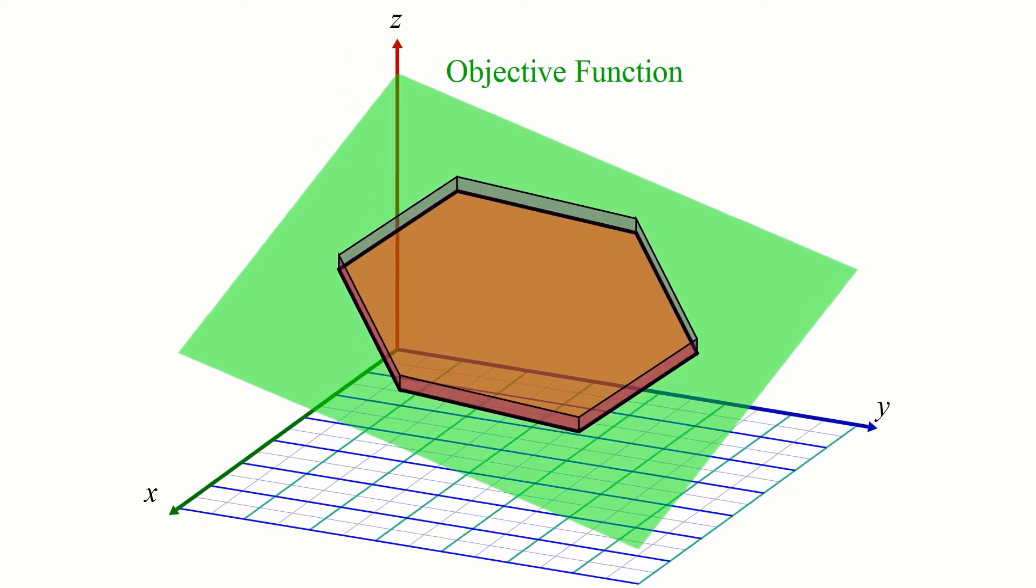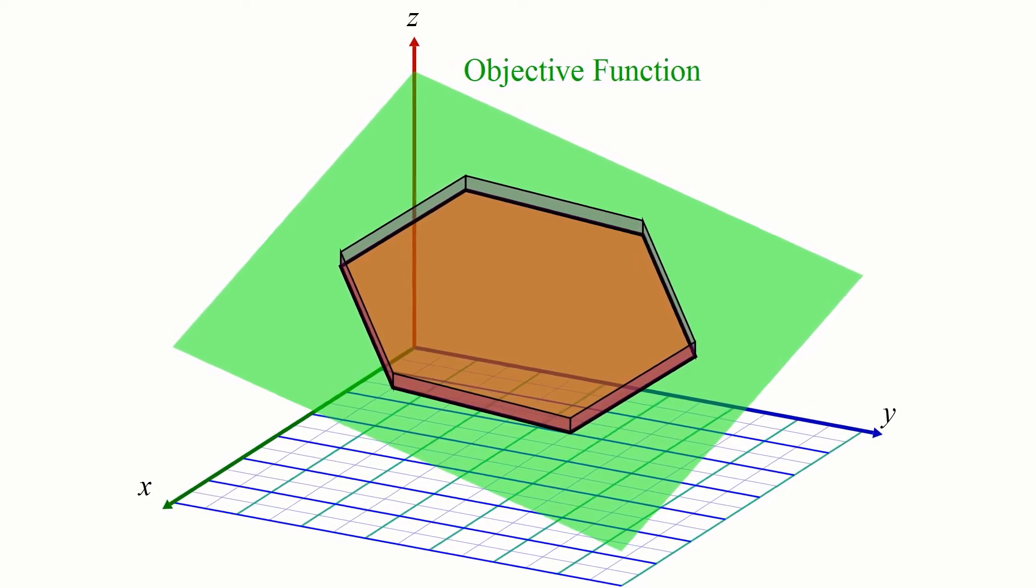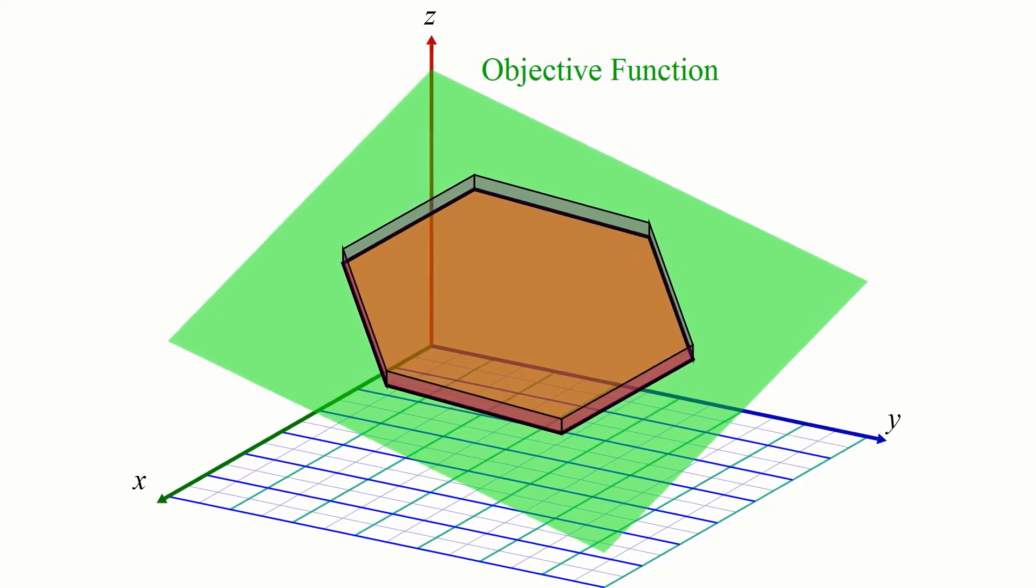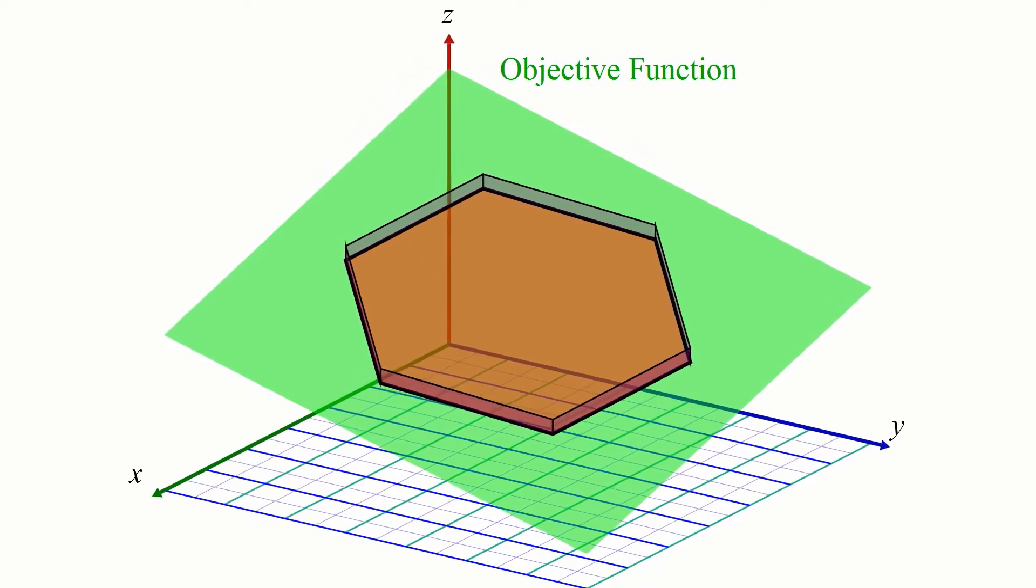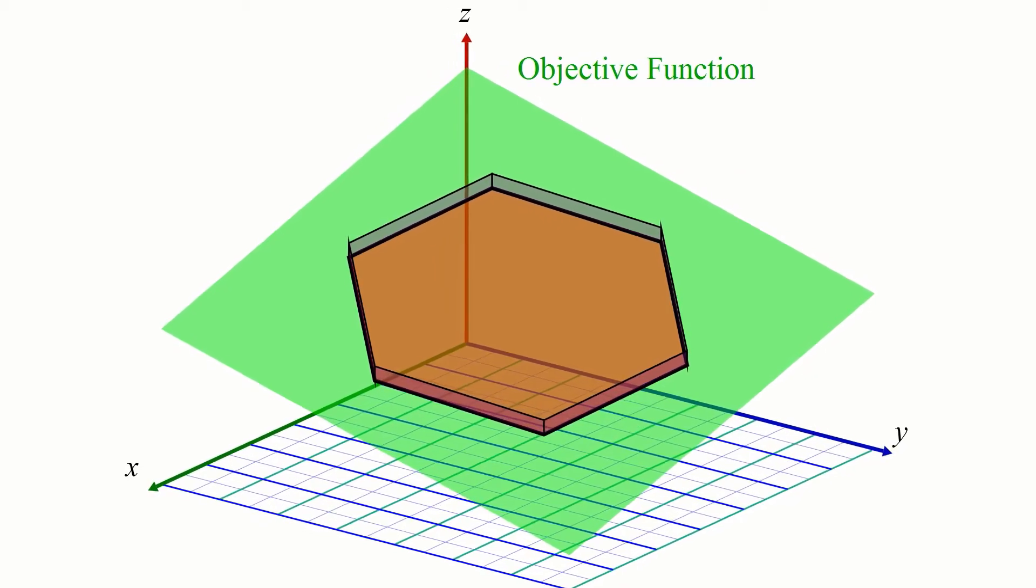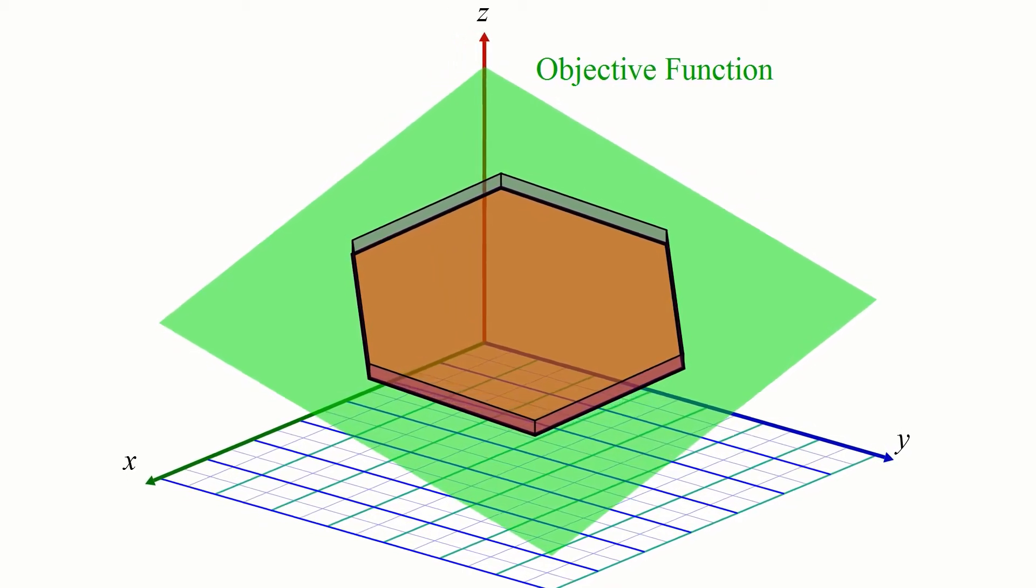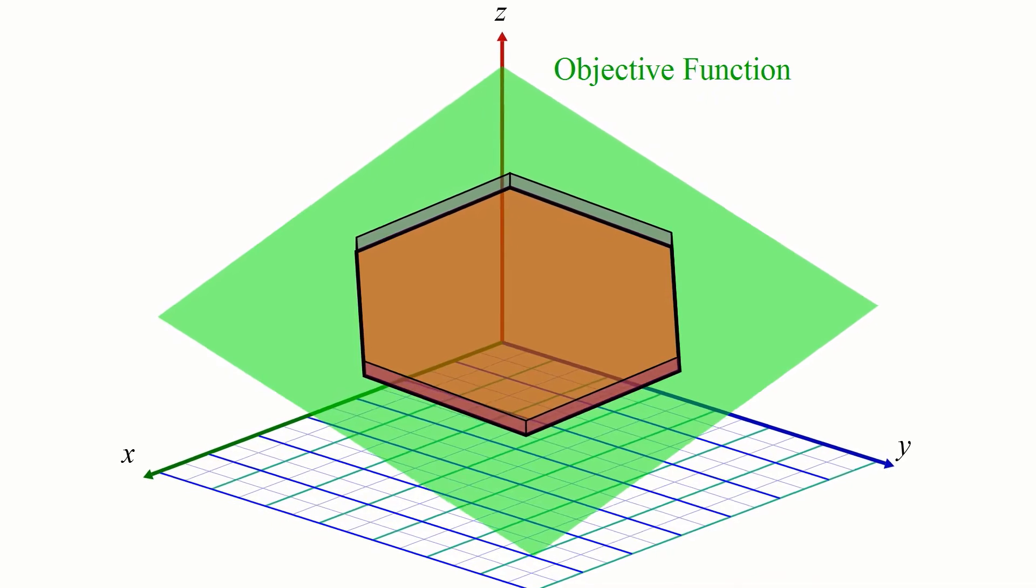We can imagine the feasible region represents a plot of land you own on a slanted hillside. Continuing with our analogy, let's say you wanted to find the lowest point on your property, the point with lowest elevation. How would you do it?